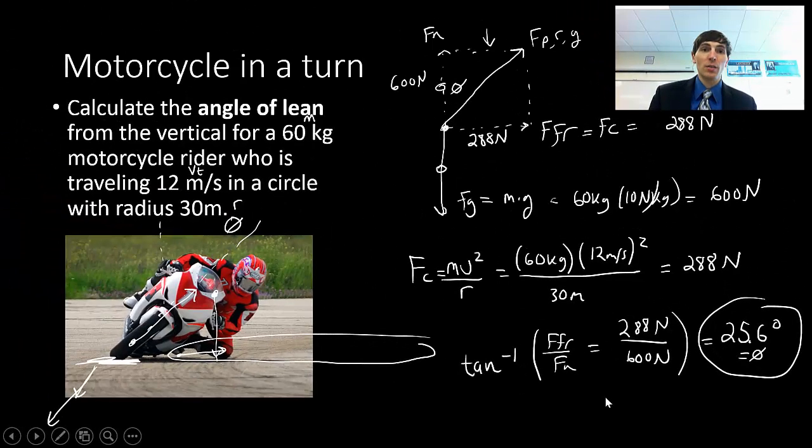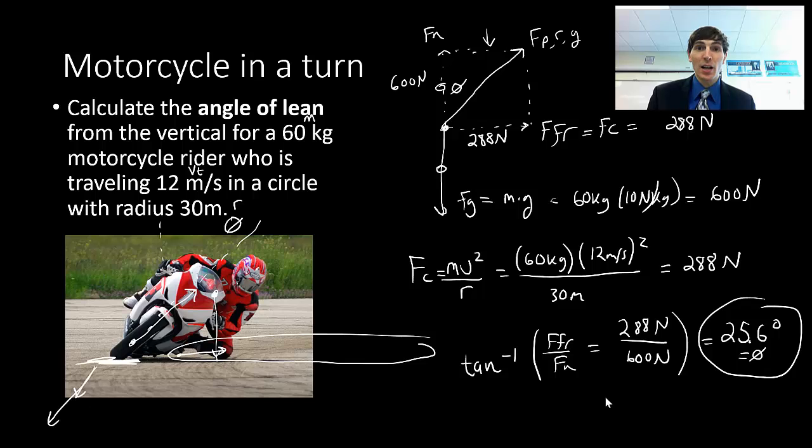So now we can actually figure out what angle the rider has to lean in order to successfully complete this turn. If he doesn't lean enough and his center of gravity is not at the right point in space, then he will not make the turn. All right, this was how to do a problem with a lean, and I hope that this was helpful.